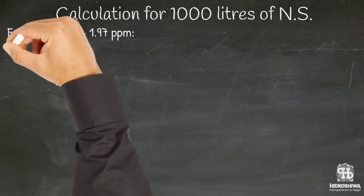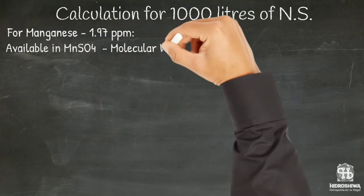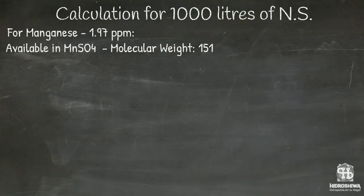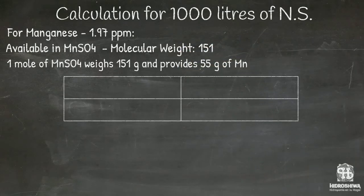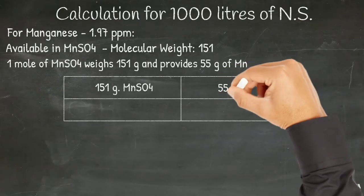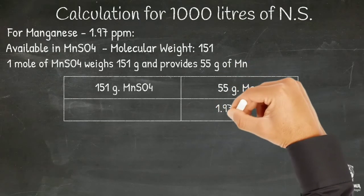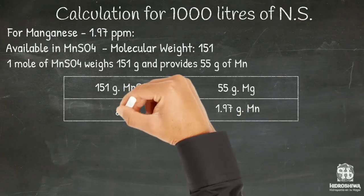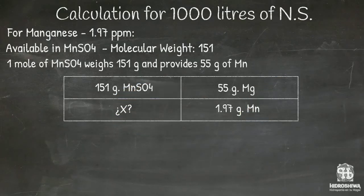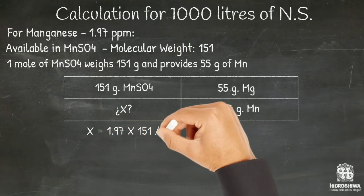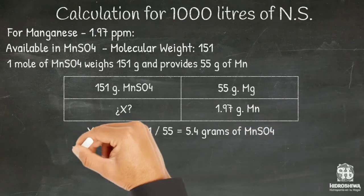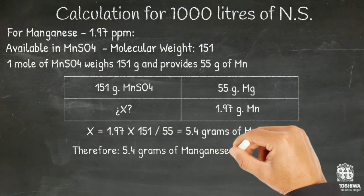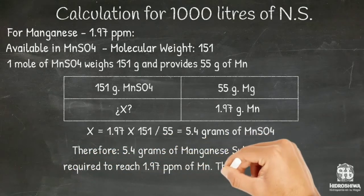Sulfur is also present in manganese, zinc, and copper sulfate. For manganese, available in manganese sulfate with a molecular weight of 151: one mole weighs 151 grams and provides 55 grams of manganese. We calculate the amount of manganese sulfate to provide 1.97 grams of manganese: X equals 1.97 times 151 divided by 55, which results in 5.4 grams of manganese sulfate. That amount in turn provides 1.14 grams of sulfur.